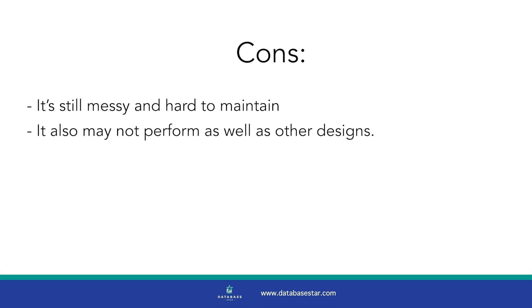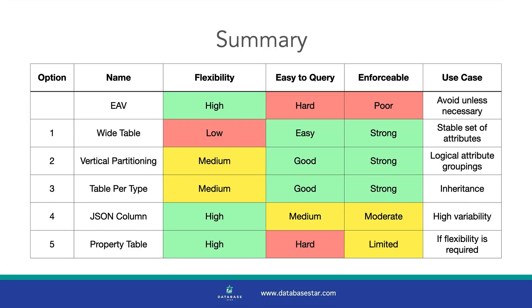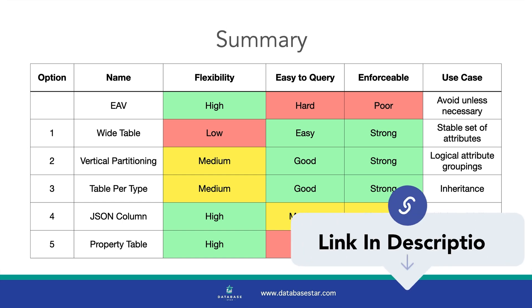Here is a summary of the designs we looked at. Like many things in software, each option is a trade-off between several factors. I recommend avoiding the EAV design and choosing one of the alternatives depending on your requirements. Ideally, the data would be normalised like in option 1, but other options offer different benefits with more flexibility. Check the link in the description for a guide to these options. Now that you've learned more about this type of database design and some better options, you'll want to watch the next video to learn a few tips on improving your database design. Thanks for watching.